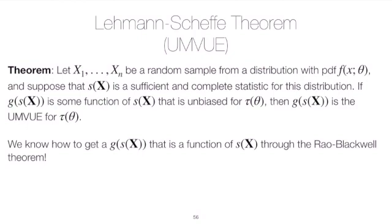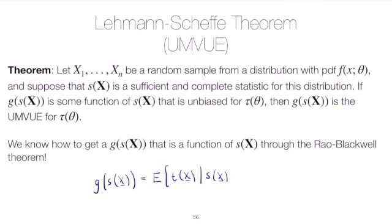Importantly, we know how to get a function of the sufficient statistic through the Rao-Blackwell theorem. The Rao-Blackwell theorem says our G(S(X)), where S(X) is sufficient and complete, is equal to the expectation of some starting point — an unbiased estimator of tau of theta — conditioned on S(X), where S(X) is sufficient and complete.